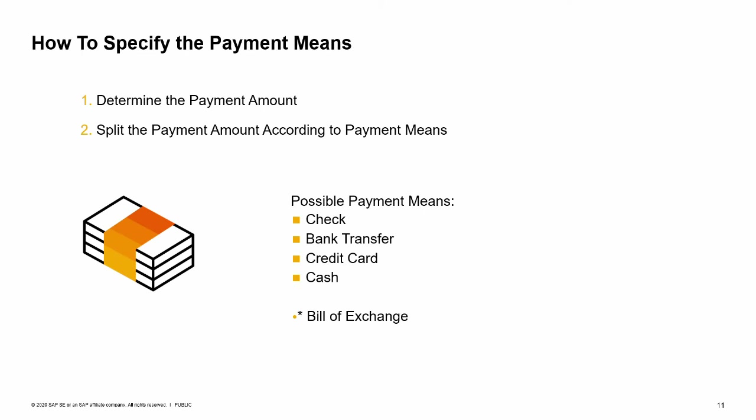After you determine the payment amount, you must specify the payment means. You can select one of the following: check, bank transfer, credit card, or cash. In some countries, you can also use the bill of exchange payment mean. Choose the payment means icon to open the payment means window. In most cases, the payer pays the full amount using one means of payment; however, it is possible to split the amount among several means. The system takes the details on the means of payment for incoming payments from the customer master record. When you post a payment, the system reconciles the payment with the selected invoices and closes the transactions. If the payment was posted as a payment on account, the invoices and the payment stay open. If a partial payment was made, the system adjusts the balance due appropriately.